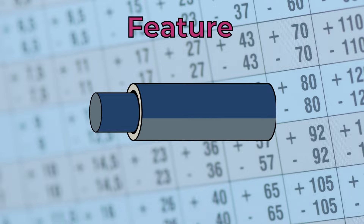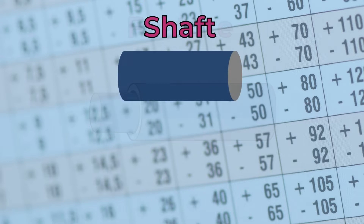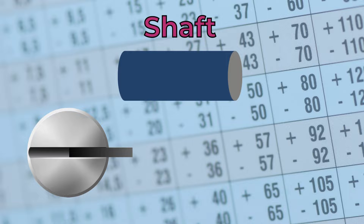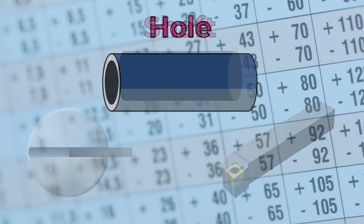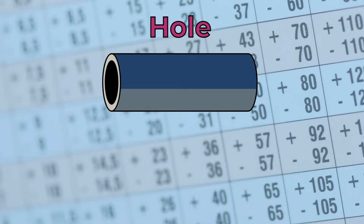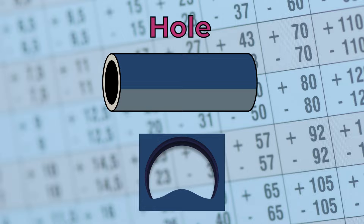Each feature is either a shaft or a bore. Shaft refers to an external feature of a workpiece, typically cylindrical in shape. However, the term can be used to describe any external feature — for example, a block that has to fit into a keyway, or the square shank of a cutting tool, are also referred to as shafts. A hole refers to an internal feature of a workpiece, typically a bore. However, the term can be used to describe any internal feature.